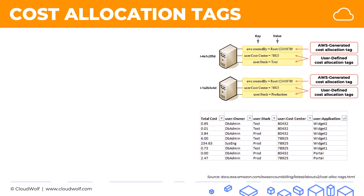For example, this is what one of your cost reports might look like. You can then group your costs by environment, by application, by cost center, by owner, and so on. It allows you a lot of flexibility in identifying where costs are coming from, where they're attributed to, and doing further analysis.